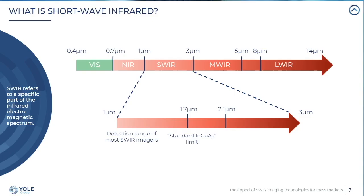SWIR refers to a certain part of the infrared spectrum. On the figure, you can see on the left-hand side the visible domain, which is roughly between 0.5 and 0.7 microns, then the near infrared between 0.7 and 1 micron. At Yole, we consider the SWIR band to span between 1 micron and 3 microns, followed by the mid-wave infrared and the long-wave infrared.